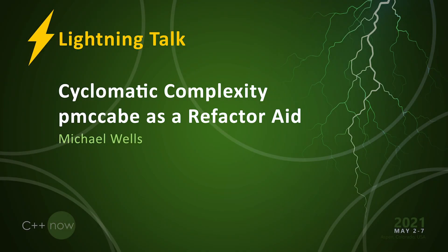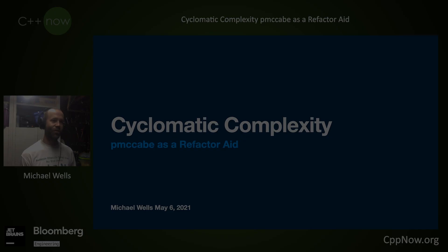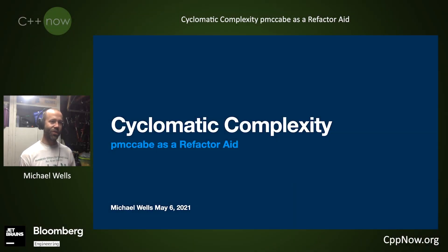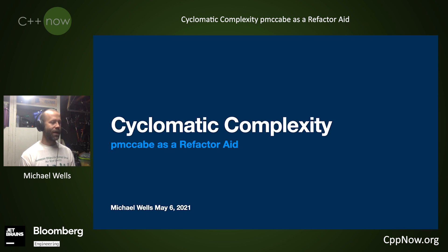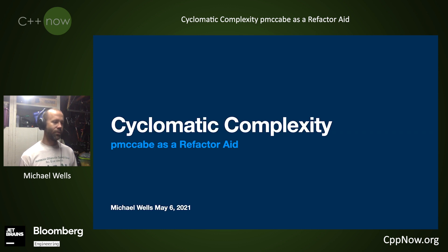A lot of you have probably heard the term cyclomatic complexity — it refers to compilers navigating through code. What I'm going to talk about is using a command line tool called p-mccabe, which had been around for a long time. You can install it on Linux or with Brew on Mac pretty easily, or you can build from source — it's very simple.